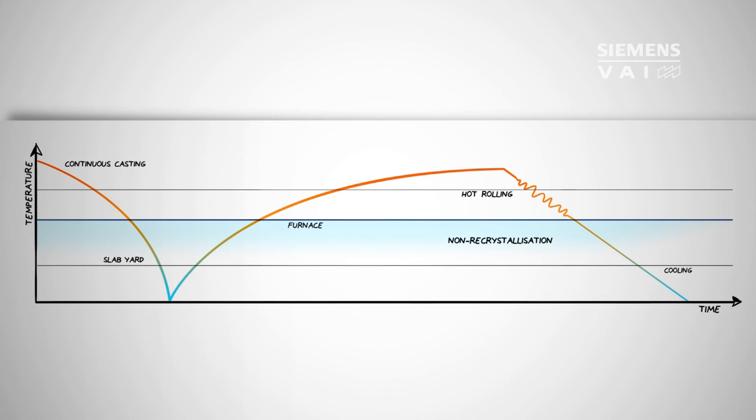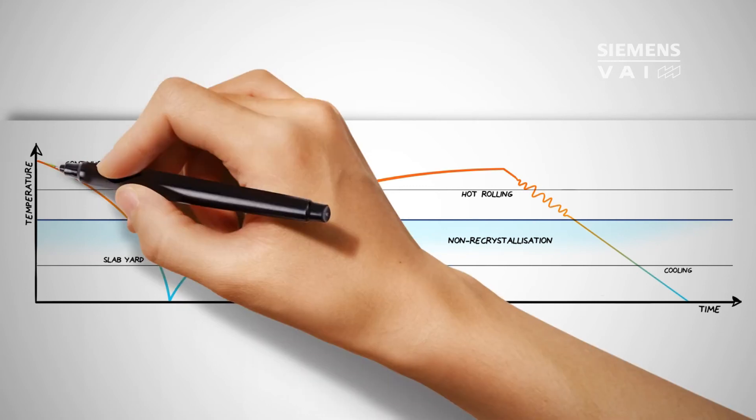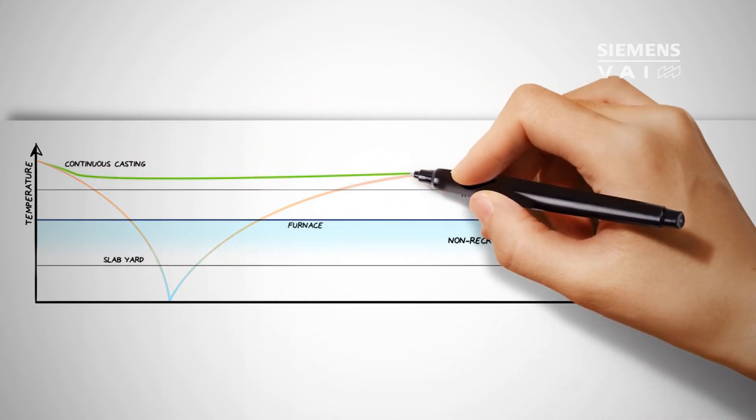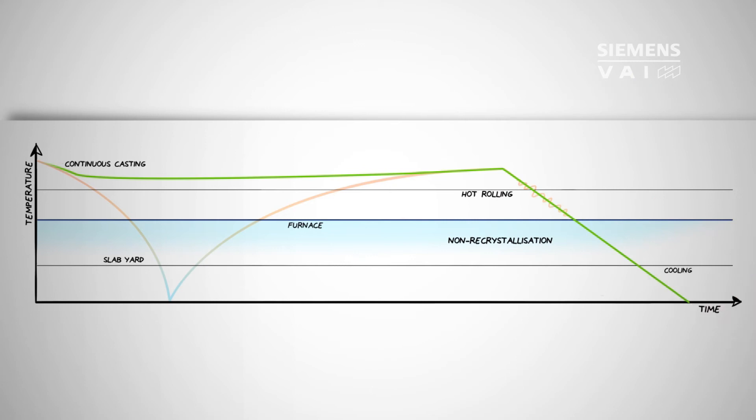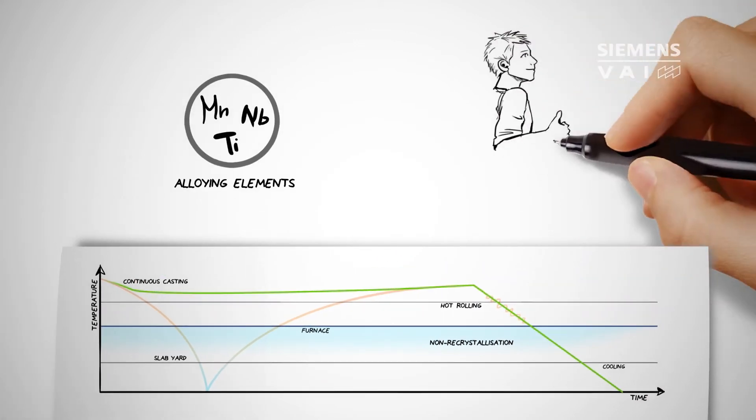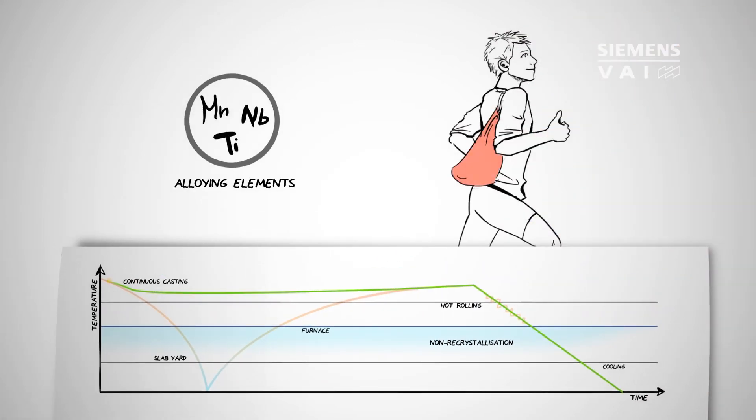Extensive alloying can only be avoided by means of direct cast rolling and constant temperatures. This means that just a small backpack with fewer alloy sandwiches is required, as one can be certain that the final destination can be reached by the shortest possible route.